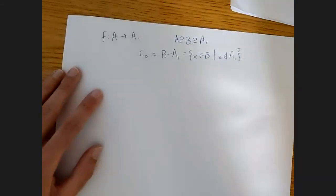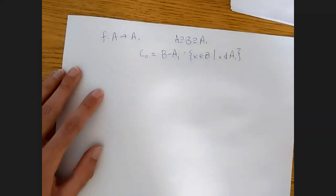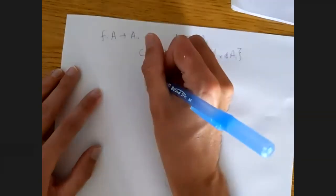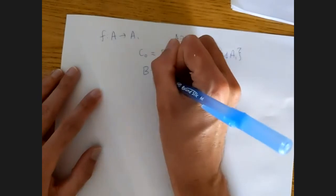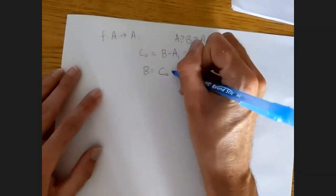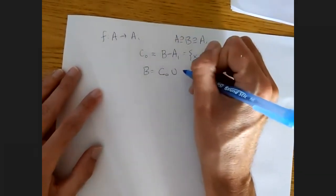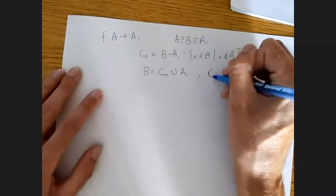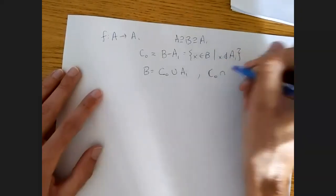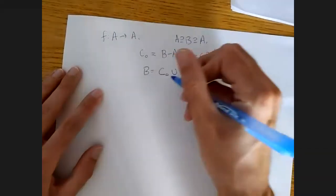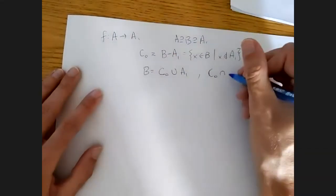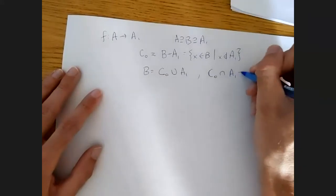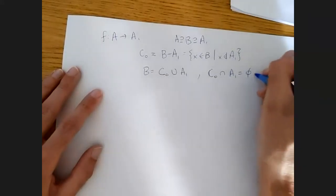So by our definition of c0, we have b is the disjoint union of c0 and a1, which just means that b equals c0 union a1, and c0 intersect a1 equals the empty set.